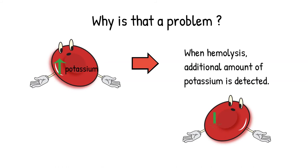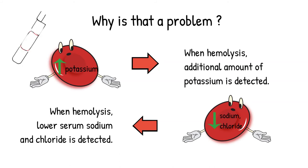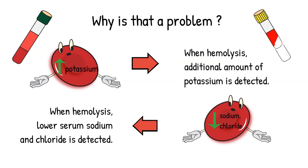Besides potassium, sodium and chloride levels will also be off. Since sodium and chloride are lower inside the cells, once the cells lyse, the intracellular fluid mixes with the plasma and decreases the expected levels of sodium and chloride. In short, potassium is falsely elevated while sodium and chloride will be falsely low.